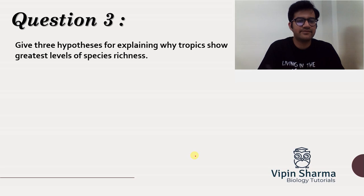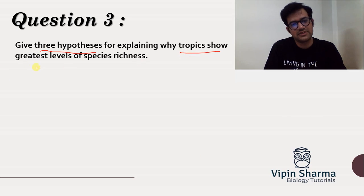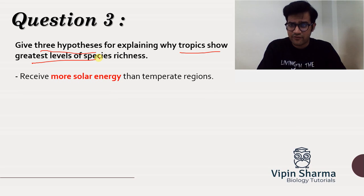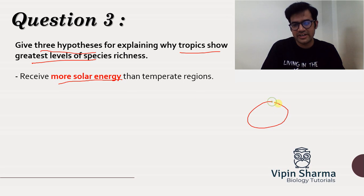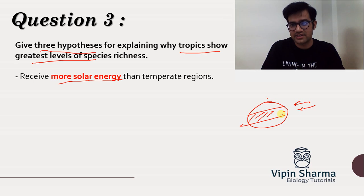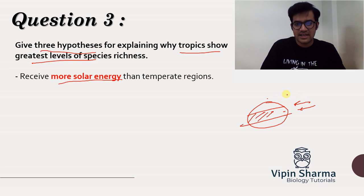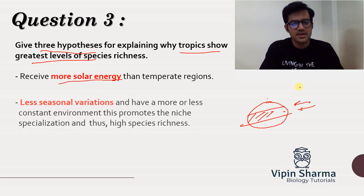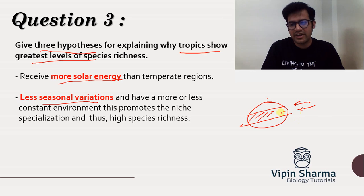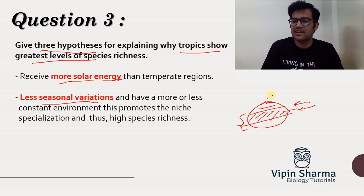The third question is: give three hypotheses explaining why tropics show a greater level of species richness. The first point is that tropics receive more solar radiation. The amount of solar radiation received by tropical regions is more than temperate or polar regions. More solar radiation means more productivity and more biomass content. The second point is less seasonal variation — tropical regions experience pretty much constant seasons, while temperate and polar regions experience extremes of temperature.